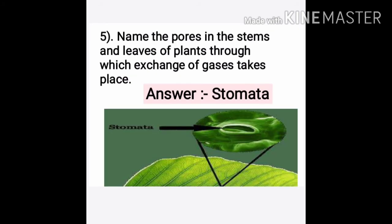Question five: Name the pores in stems and leaves of the plant through which exchange of gases takes place. The answer is stomata. The opening and closing of stomata is controlled by guard cells, and the contraction and expansion of guard cells is controlled by moisture and sunlight.